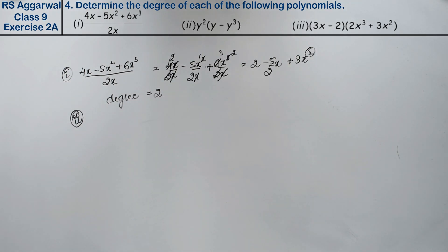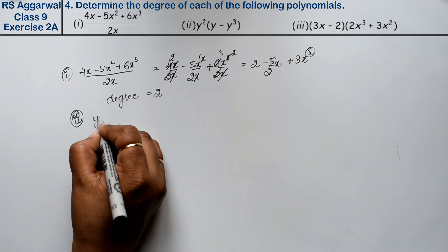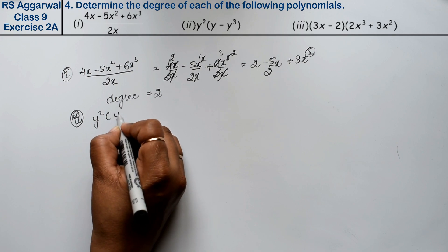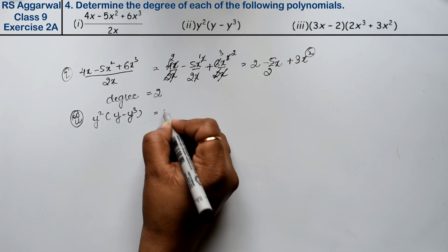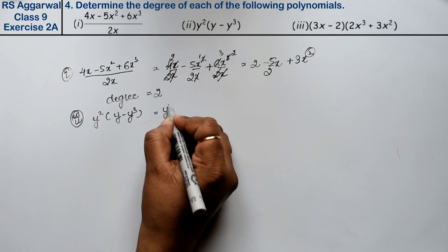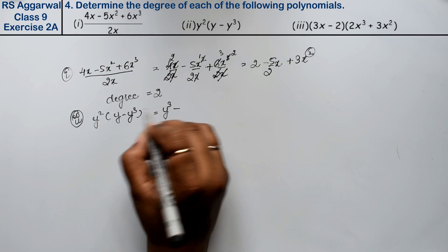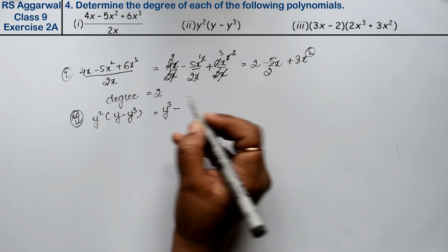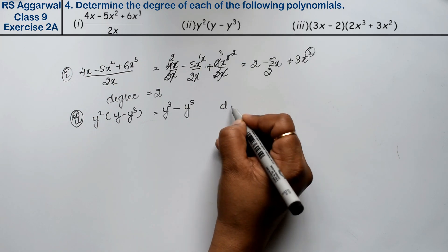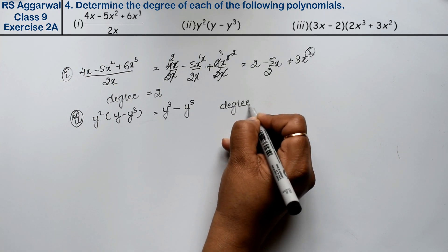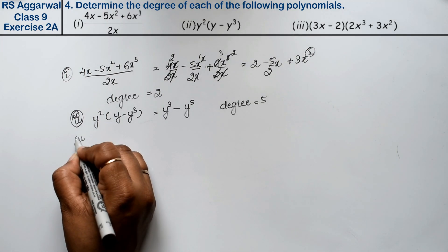Let's do the second part. Second part is y squared into (y minus y cubed). Opening the bracket gives y to the power 3 minus y to the power 5. The highest power is 5, so the degree is 5.